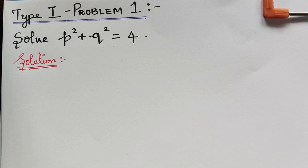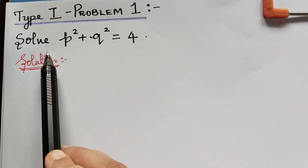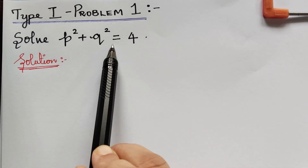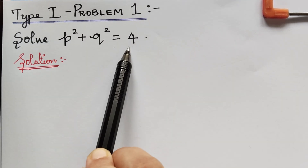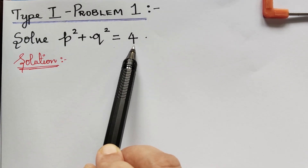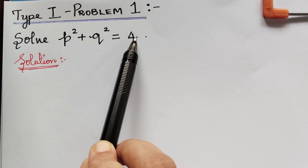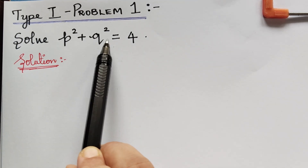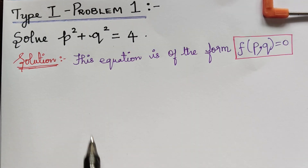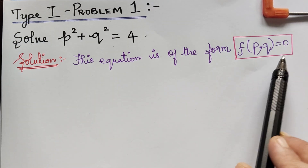Here we have problem 1 from type 1. We are going to solve p squared plus q squared is equal to 4. We observe that only p and q are present in this equation. So first we have to write that this equation is of the form f of p, q is equal to 0.